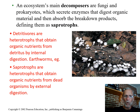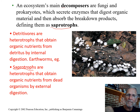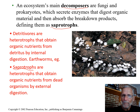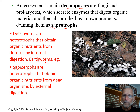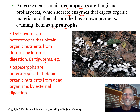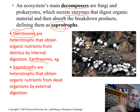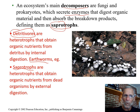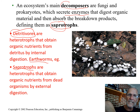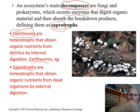A saprotroph is a type of decomposer that, instead of directly eating dead material like an earthworm would, secretes enzymes outside its body — what fungi do — allowing digestion to happen externally, then absorbing the nutrients. A detritivore, by contrast, directly eats dead organic material called detritus, like rotting leaves. Both are decomposers; the main ones are fungi and prokaryotes.